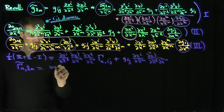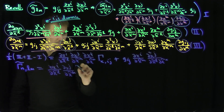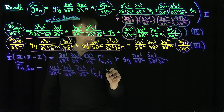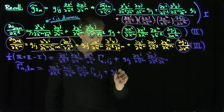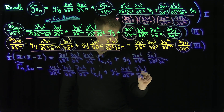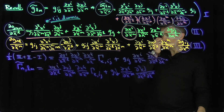So in other words, the lower Christoffel symbol transformation is exactly: Γ̃_NLM = (∂X^I/∂X̃^L)(∂X^J/∂X̃^M)(∂X^K/∂X̃^N) Γ_IJK plus an extra second-derivative term. Now, what's the transformation law for the upper-index version? I'd like to raise the N and raise the K.